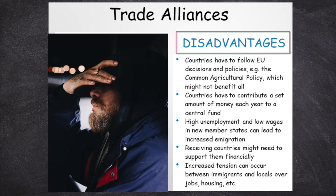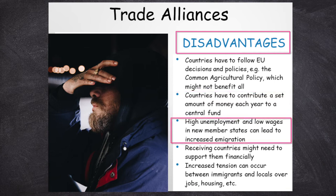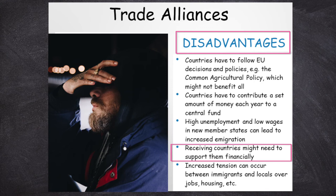The disadvantages, however, are that individual countries have to follow decisions and policies that are made at the level of the European Union and apply to all countries in the same way — as was the case with the Common Agricultural Policy — despite the fact that these decisions might not necessarily be to everyone's benefit. Countries have to contribute a set amount of money each year to a central fund, with richer countries expected to contribute most, and poorer countries often ending up as net recipients of funds. High unemployment and low wages in new member states can sometimes lead to increased emigration — states when they join the European Union see a loss of people of working age looking for better wages in more established EU member countries. These countries that receive the migrants might then struggle to support them financially, providing more housing, schools or healthcare, and this can sometimes lead to increased tension between immigrants and native populations over things like jobs and housing.